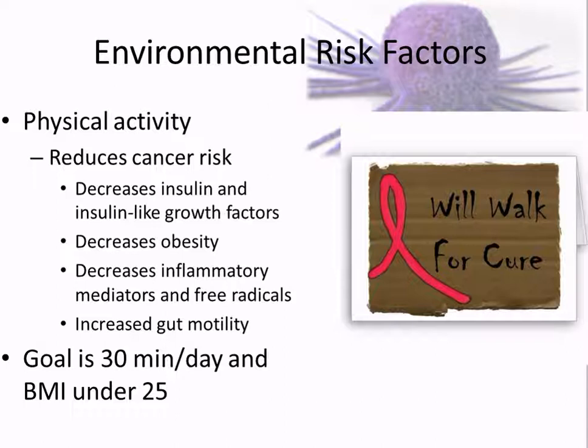Physical activity also increases gut motility. When we eat a highly processed diet, food basically turns to clay inside the digestive tract. Fiber acts like sandpaper for the gut — it scrapes off debris along the walls of the intestines. Processed food can leave carcinogenic substances stuck along the GI tract wall; fiber brushes the carcinogenic material off. The goal is 30 minutes of exercise a day with a BMI under 25, which has been found to reduce cancer risk.